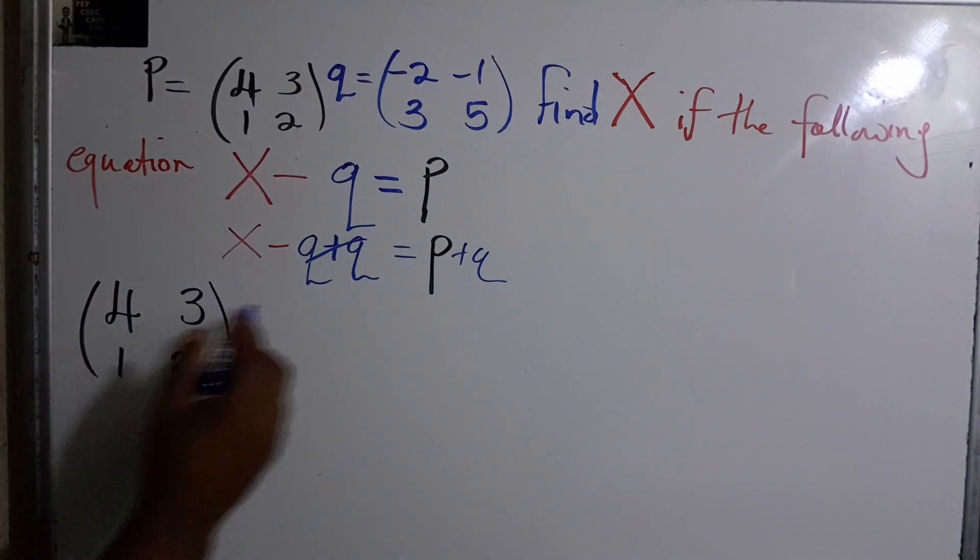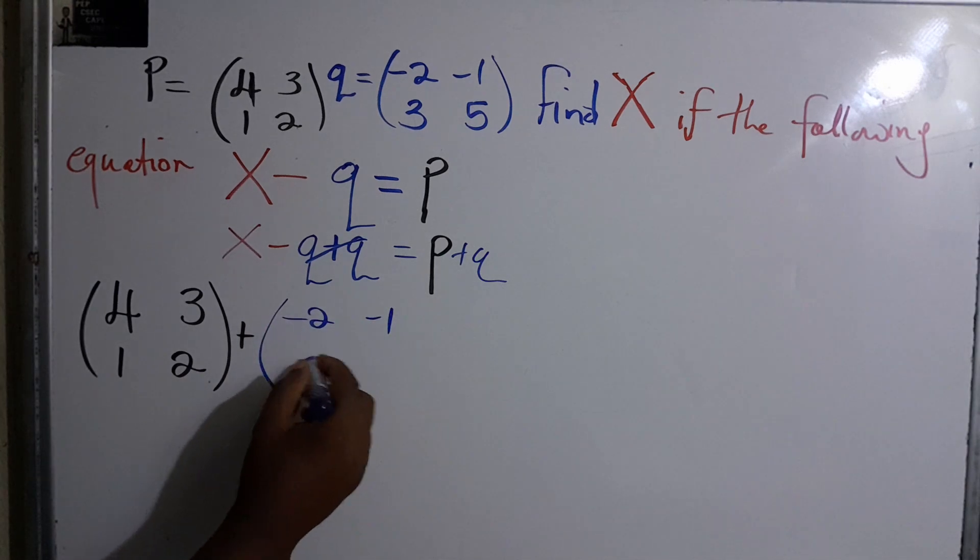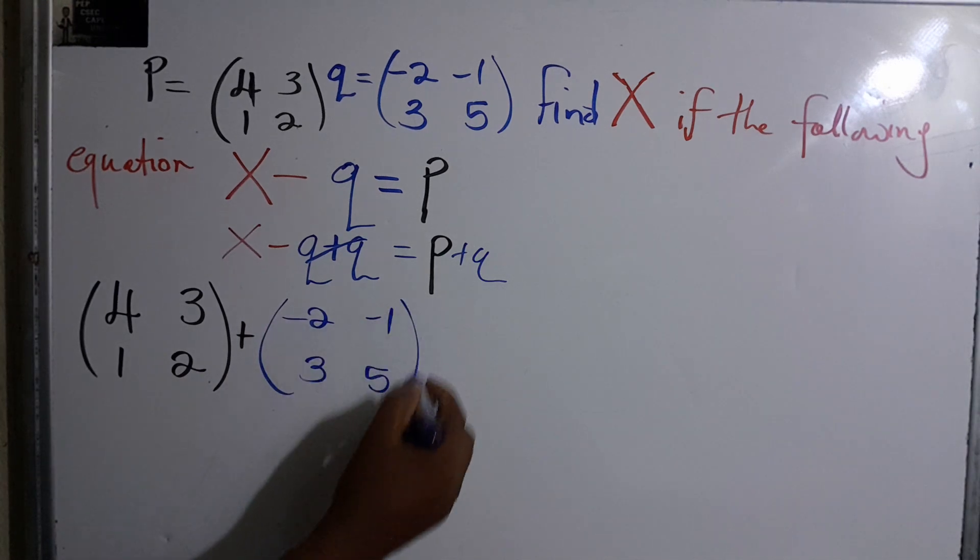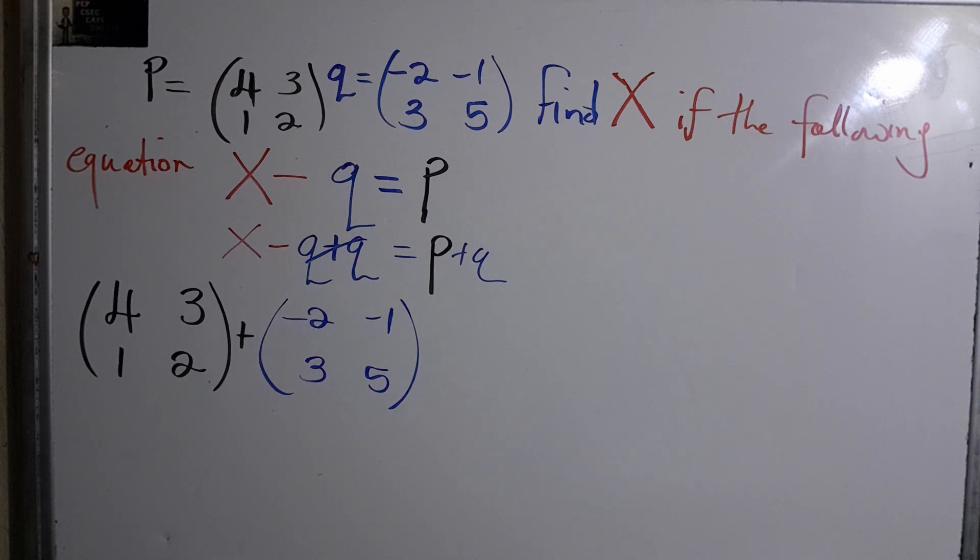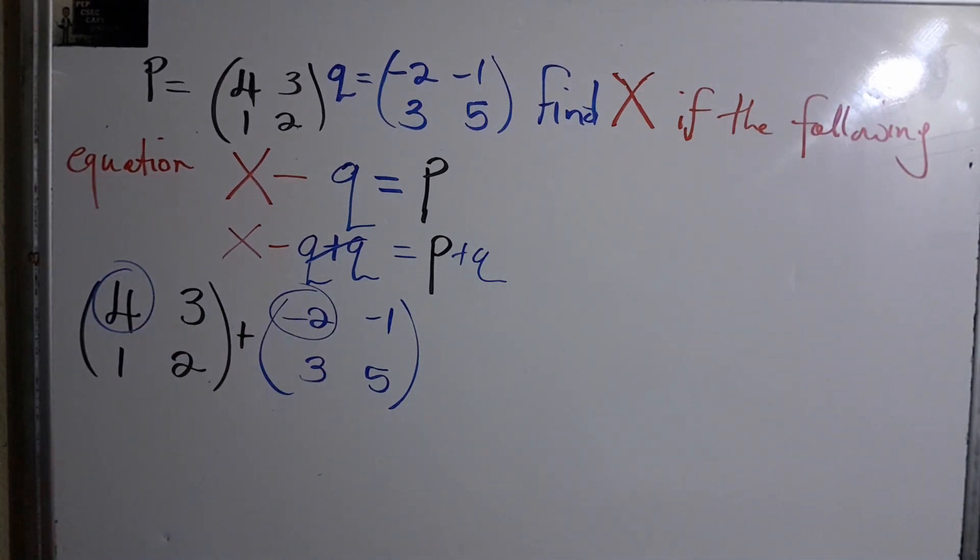Q is (-2, -1; 3, 5). Recall that when we're adding matrices, we're just grouping the corresponding elements. So this 4 goes with this, so we'll write back all of this which is 4, 3, 1, and 2.